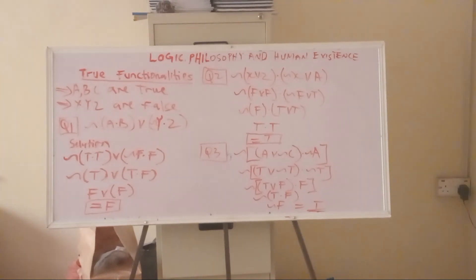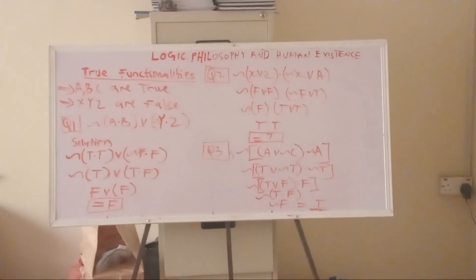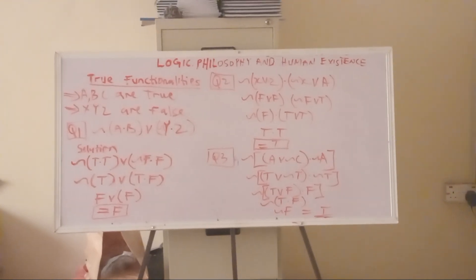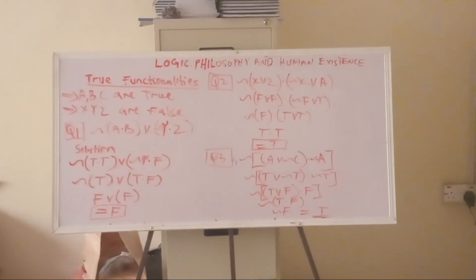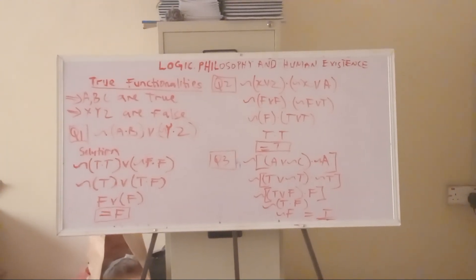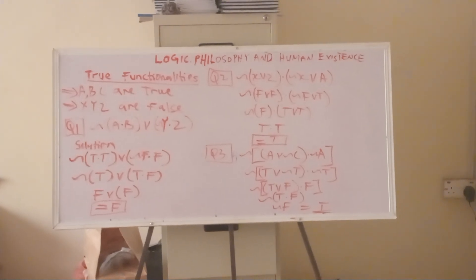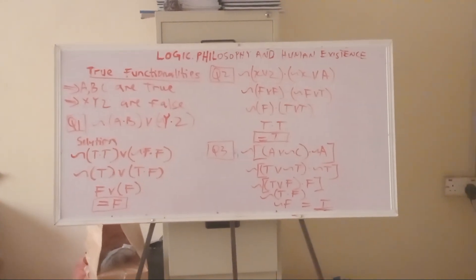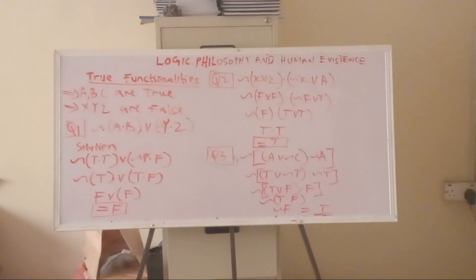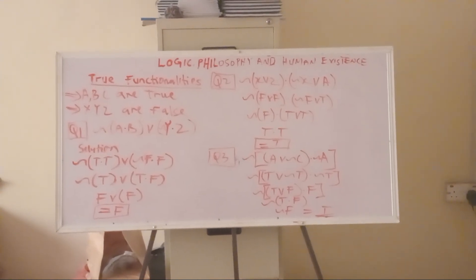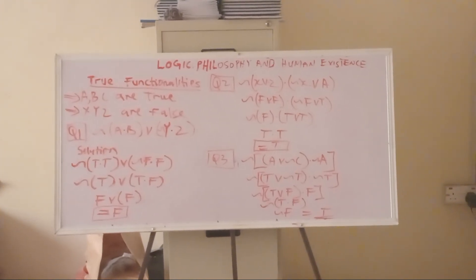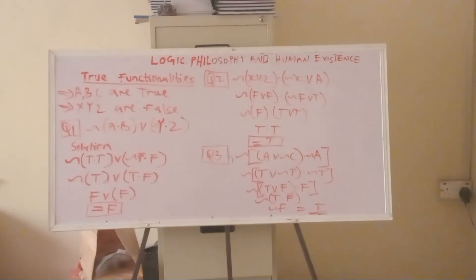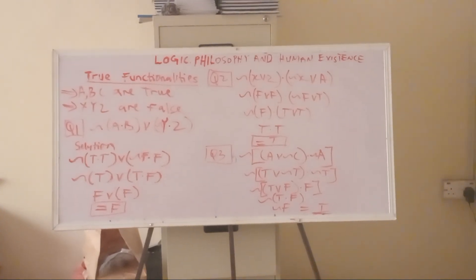When you are using a wedge, the true functionality gives you true because Nigeria is located in Europe is false, while France is located in Europe is true. Wedging the two together gives true, because one of the two statements is true.